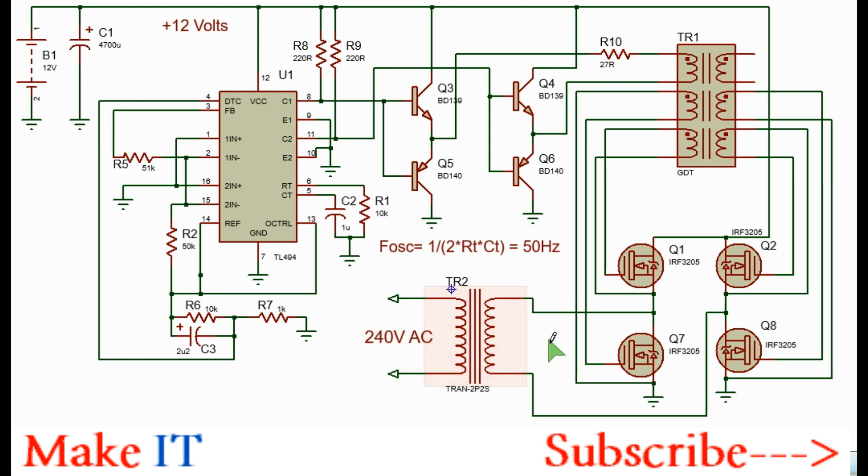Test with the number of windings until you get 240 volts AC on the secondary side. That's all about this inverter circuit with the TL494 and the H-bridge with power MOSFETs.